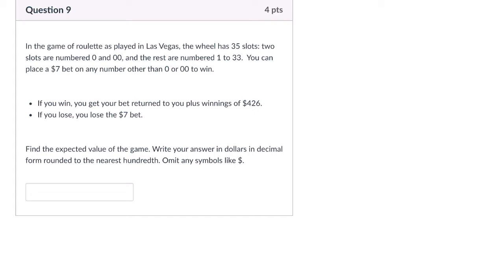So there's a lot in this problem. Let's just read through it. It says that the game of roulette is played and the wheel has 35 slots. Two are 0 and 00, and the rest are numbered 1 through 33. You can place a $7 bet on any number other than 0 or 00 to win. So our bet is $7.